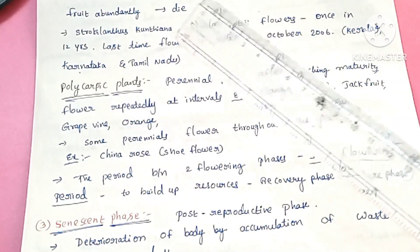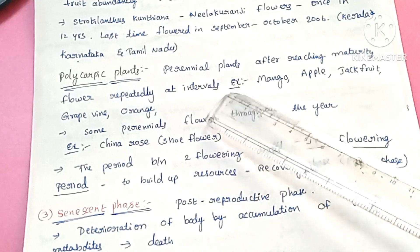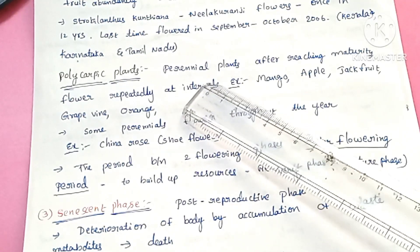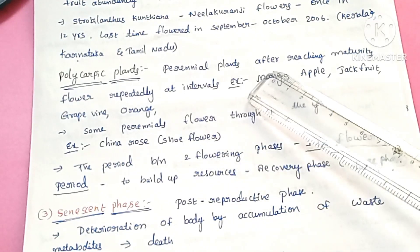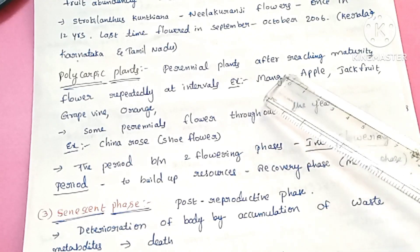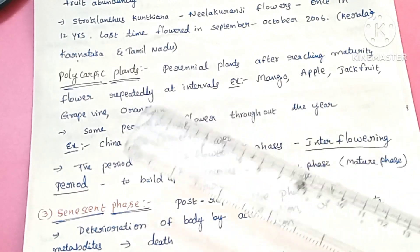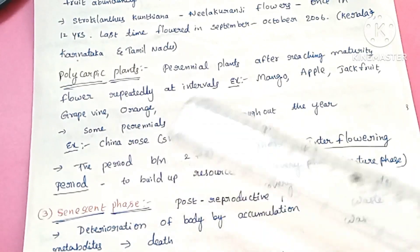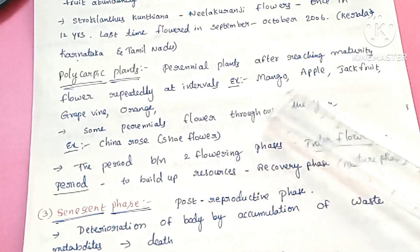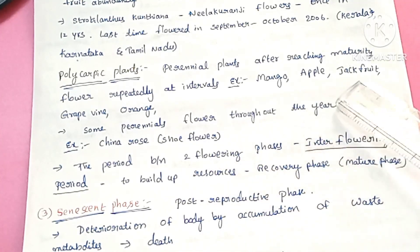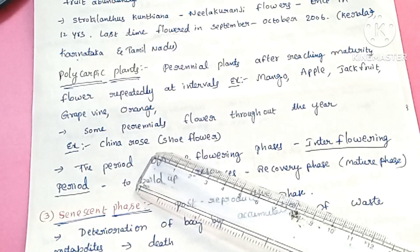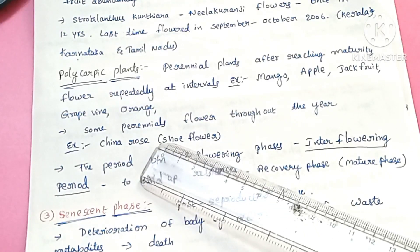Next are polycarpic plants. These are perennial plants that live for many years. After reaching maturity, they flower at regular intervals. Examples include mango, apple, jackfruit, grapevine, and orange. These are perennial plants that produce fruits every year.